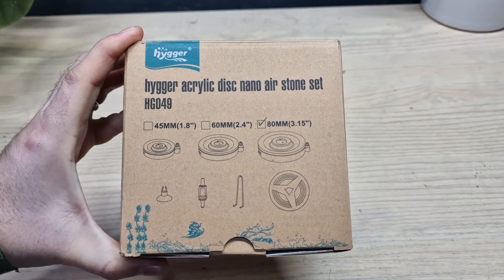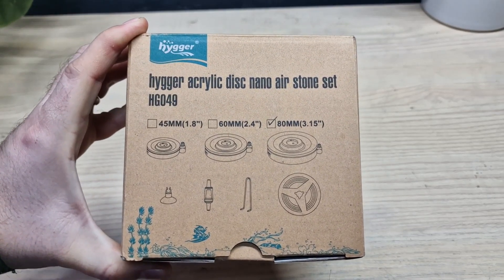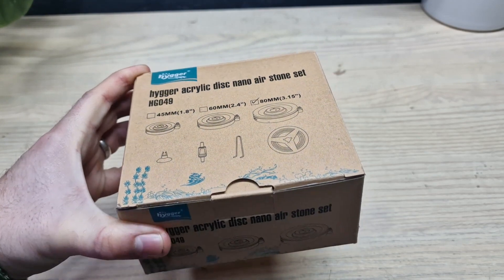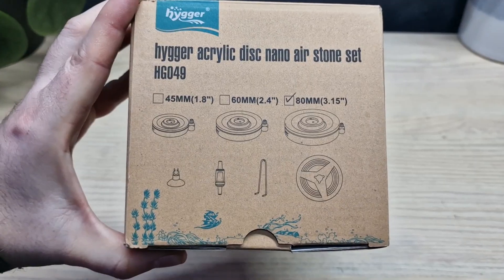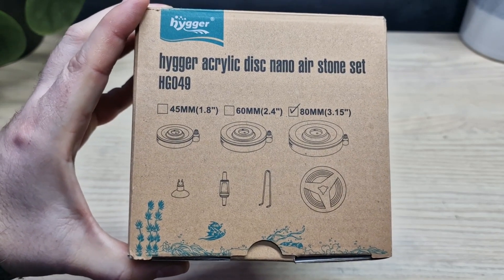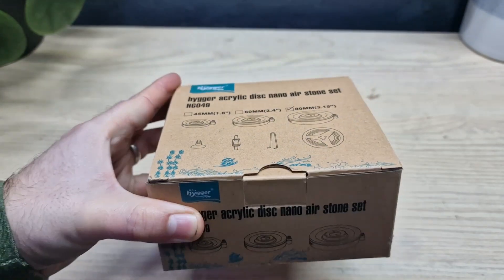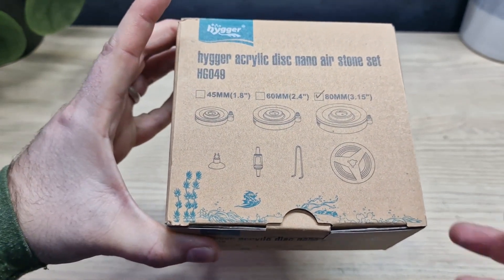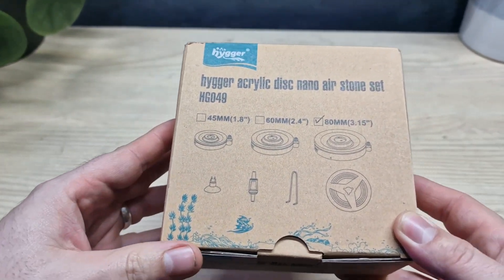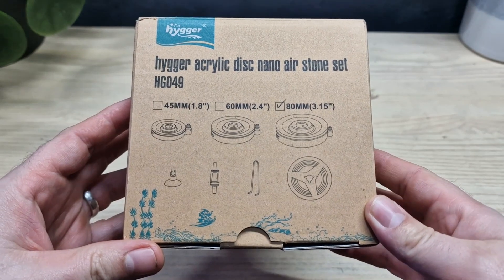In this box we have something that every fish keeper should be familiar with, but also something which I have never seen before. We are of course looking at the Heiger acrylic disc nano airstone set. This is definitely something I have never had experience with. Of course I've used airstones before, but I've never used one that looks quite like this.